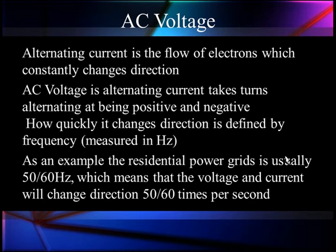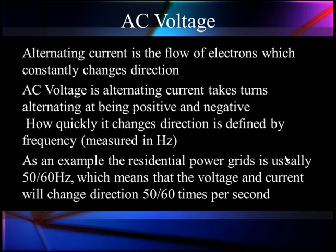AC voltage — alternating current — is the flow of electrons which constantly change directions. Part of a cycle they go one direction; the next half cycle they go the other. AC voltage takes turns alternating between being positive and negative. It quickly changes direction as defined by its frequency measured in hertz. As an example, the residential power grid is usually 50 to 60 hertz, which means the voltage and current change direction 50 or 60 times per second.